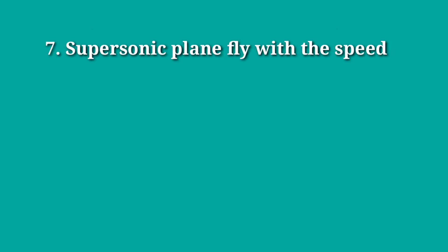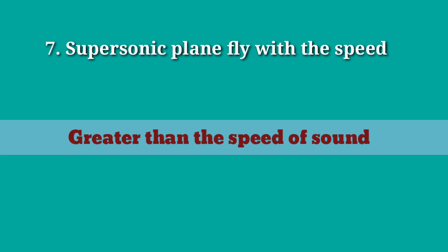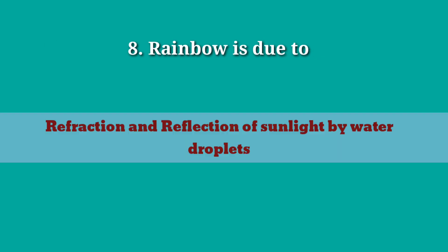A supersonic plane flies with a speed greater than the speed of sound. A rainbow is due to refraction and reflection of sunlight by water droplets.